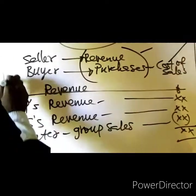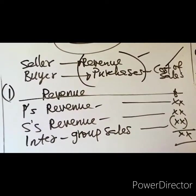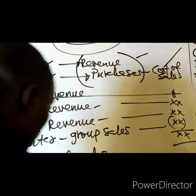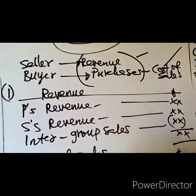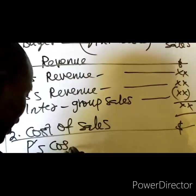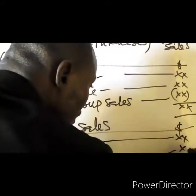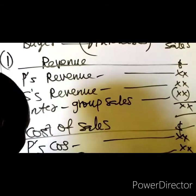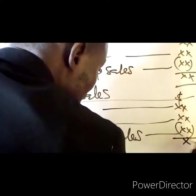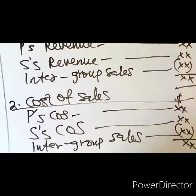The consolidated revenue will be: parent company's revenue plus subsidiary's revenue, less intergroup sales. The consolidated cost of sales will be: parent company's cost of sales plus subsidiary's cost of sales, less intergroup sales.